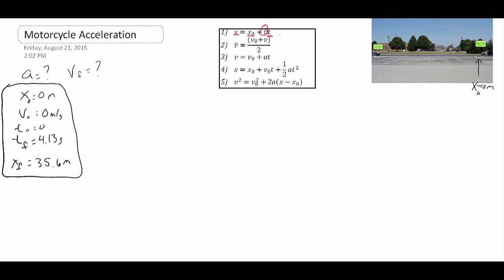Let's see if we can get the acceleration in one step. For equation two, we don't know the average velocity, we know the initial velocity (zero), but we don't know the final velocity — two things circled, so not so useful. For equation three, we don't know the final velocity, we know the initial velocity, we don't know the acceleration, and we do know the time — again two things circled, not so useful.